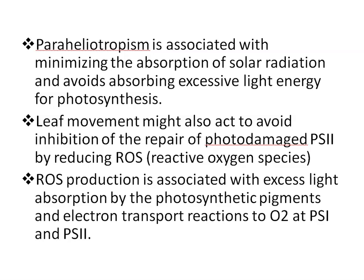Paraheliotropism is associated with minimizing the absorption of solar radiation and avoids absorbing excessive light energy for photosynthesis. Leaf movement might also act to avoid inhibition of the repair of Photosystem II by reducing ROS — reactive oxygen species. Paraheliotropism is associated with excess light absorption by the photosynthetic pigments and electron transport reactions to oxygen at Photosystem I and Photosystem II.